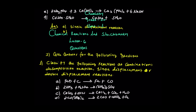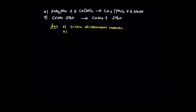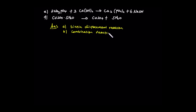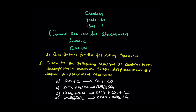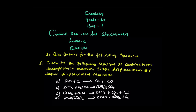In combination reaction, two or more reactants combine to form a single product. For reaction C, calcium carbonate reacts with hydrochloric acid giving us calcium chloride, carbon dioxide, and H2O. You can see two compounds as reactants and two compounds as products.